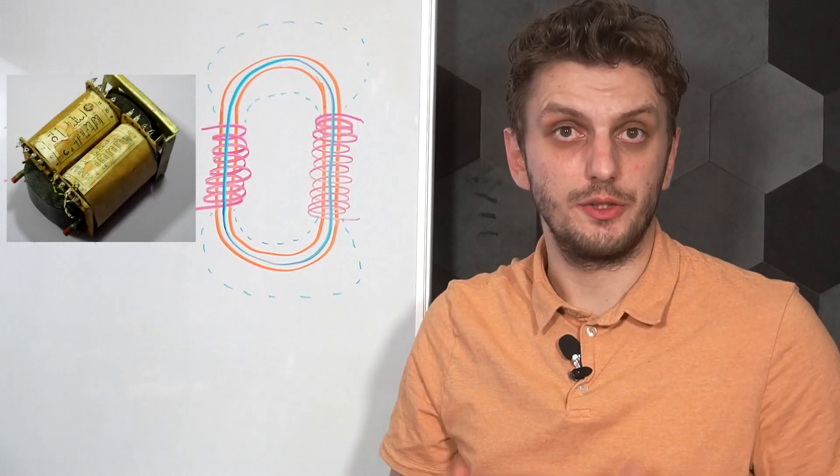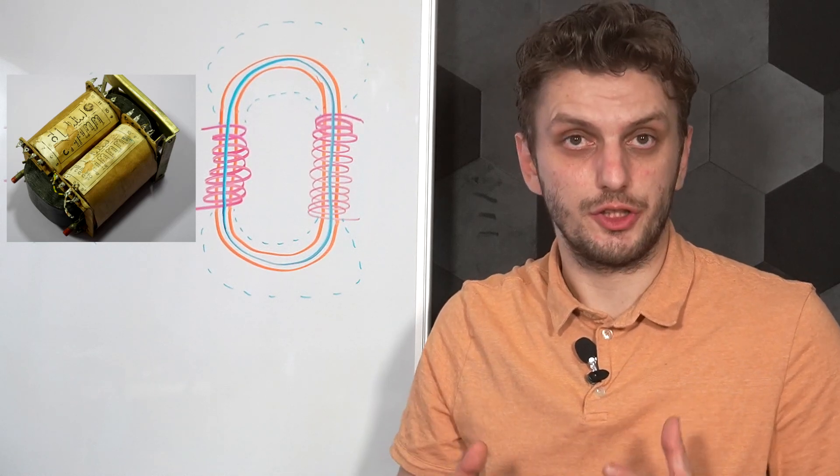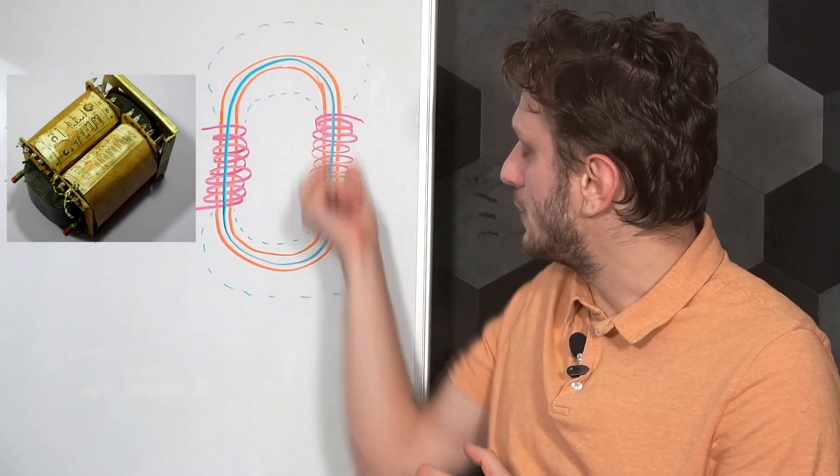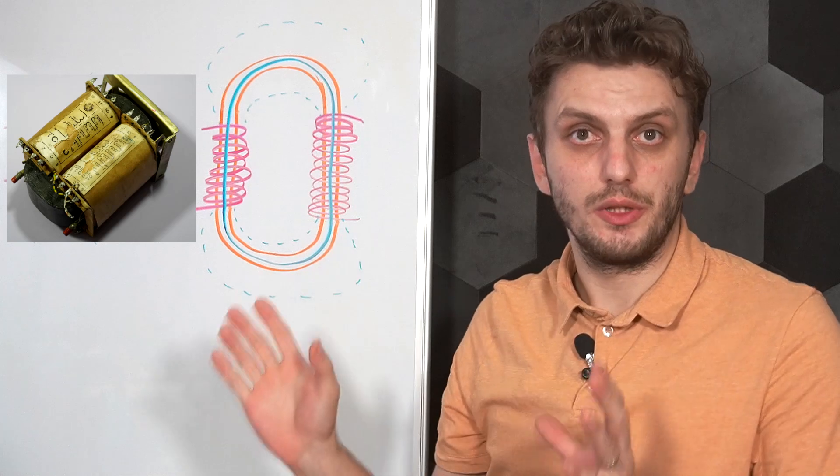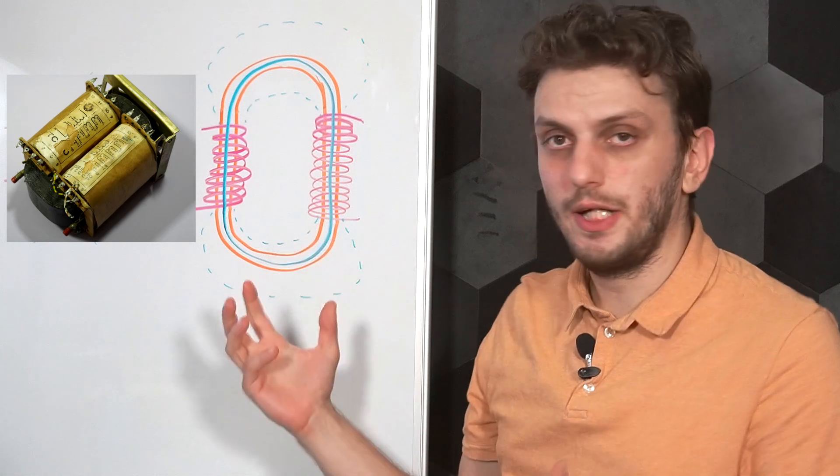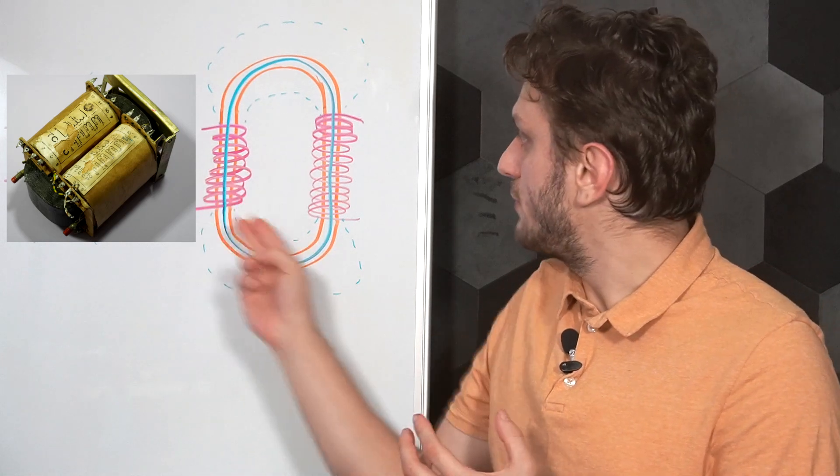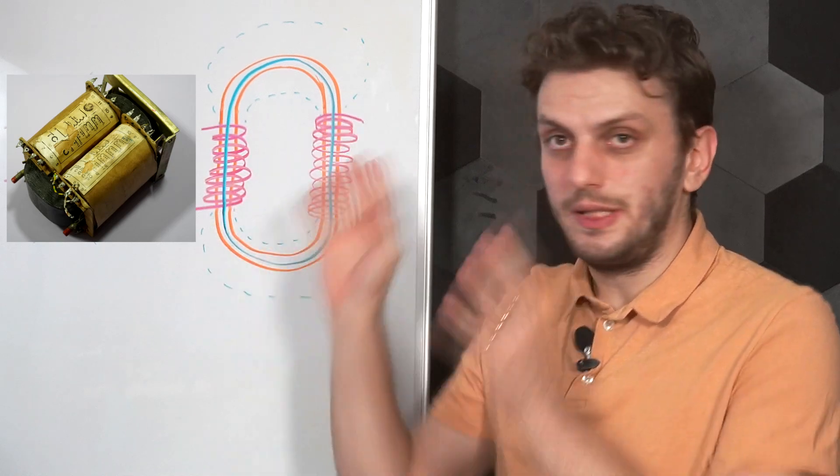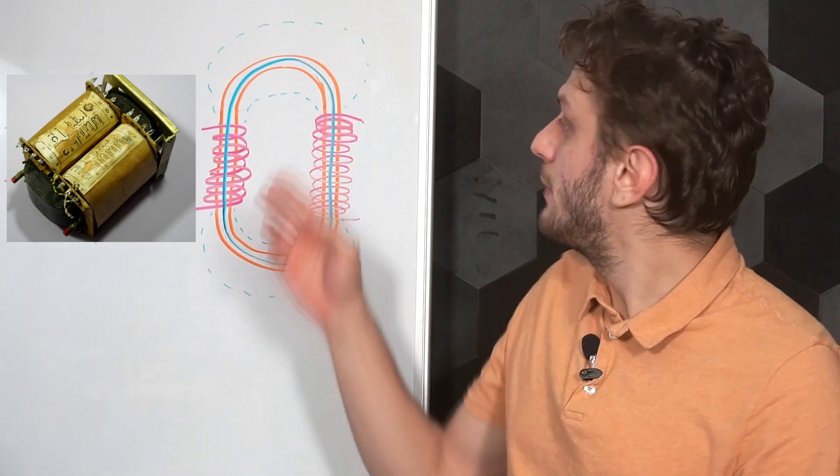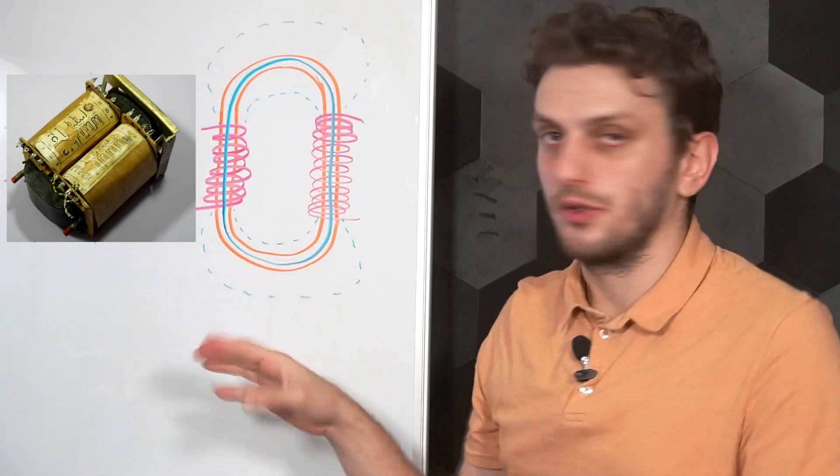Another constructive method you can try is the so-called C core. This is a bit more uniform of a structure than the EI core - the section is roughly constant. The magnetic flux is generated by the two inductors, and the only place where the magnetic flux can escape the core is through these upper and lower bits.